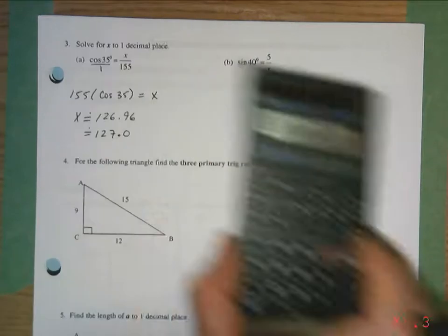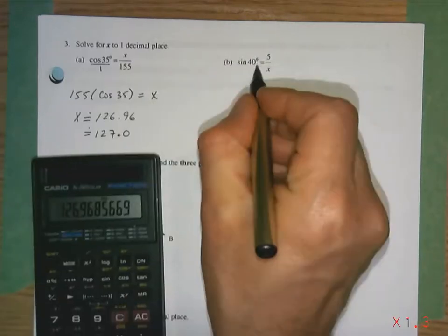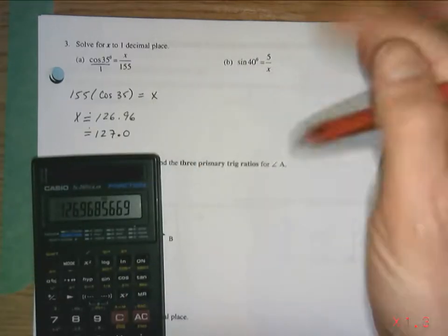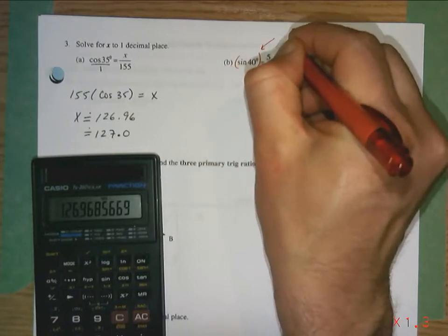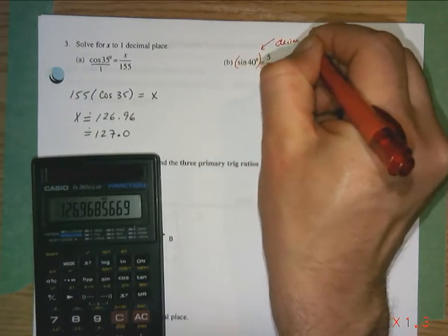Okay, next one. We've got sine of 40. Remember, that's a number. This part right here is just a decimal. Okay, that is a decimal number.